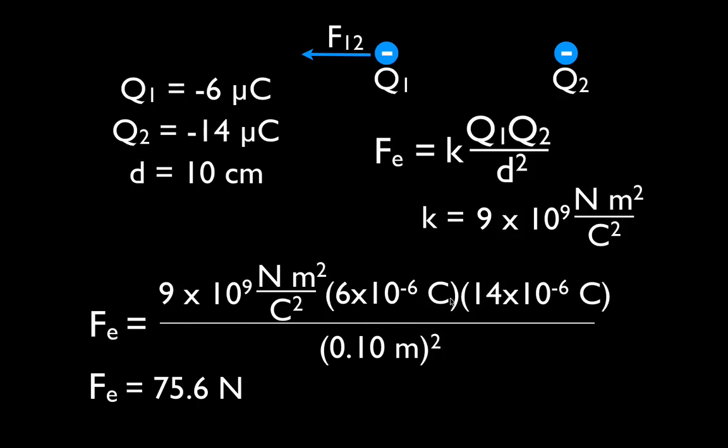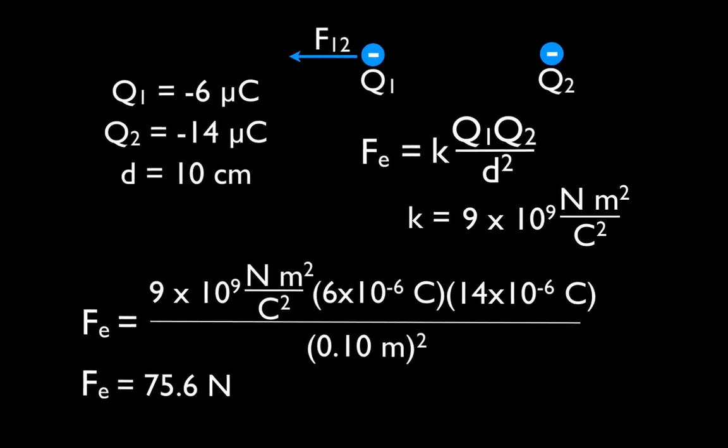Convert these to coulombs. Square the distance. And don't put negative and positive signs in for the charges. Just use the positive values. Thank you very much for watching. I hope you found that helpful. If you found that helpful, you can give me a thumbs up or a nice positive comment in the comment section below. And we will see you in the next video.